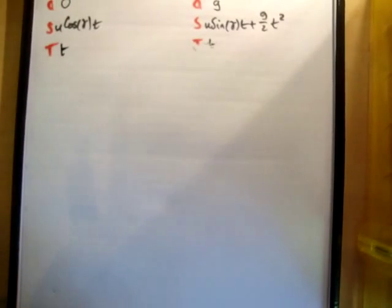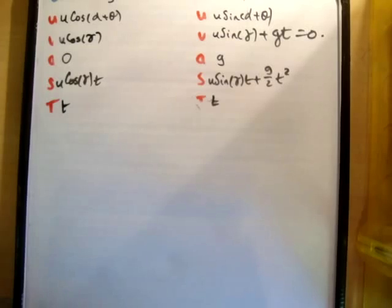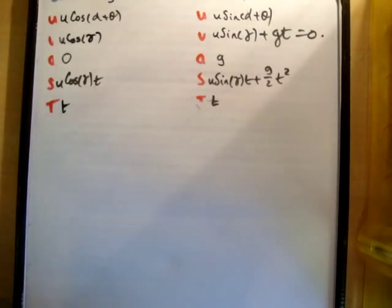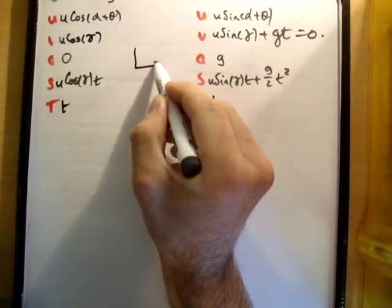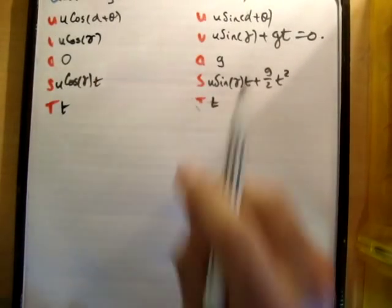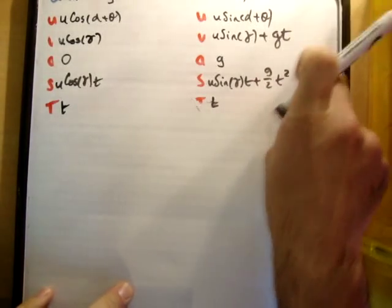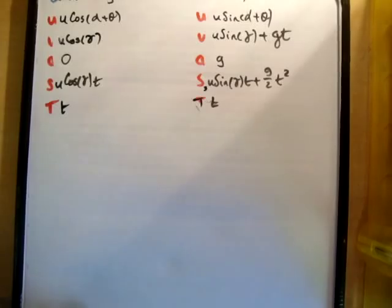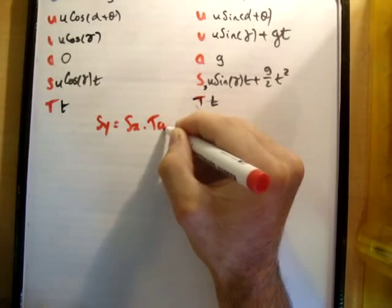Just very quickly — I'm sure you're well able to follow these things at this stage. We have s sub x equal to u cos gamma times t, with zero acceleration since we're operating in the xy plane. Similarly on the right-hand side we have u sine gamma, and v sub y equals u sine gamma plus g times t. So our condition was that s sub y equals s sub x times tan alpha.